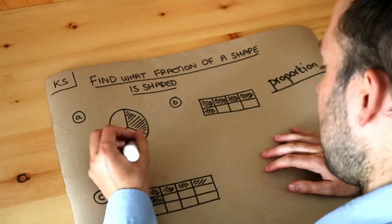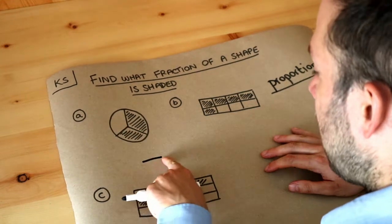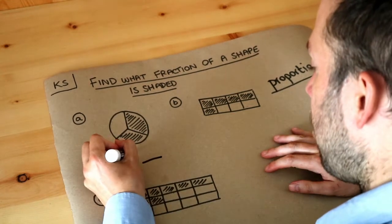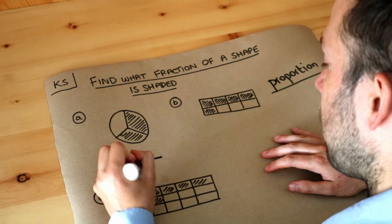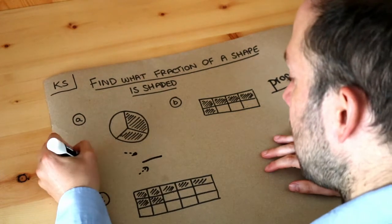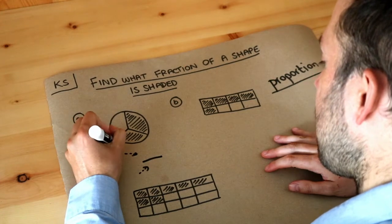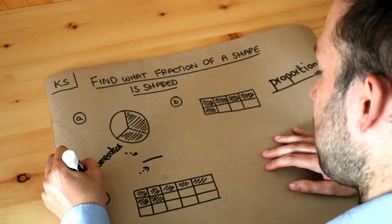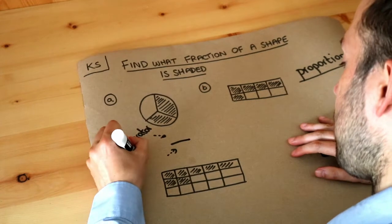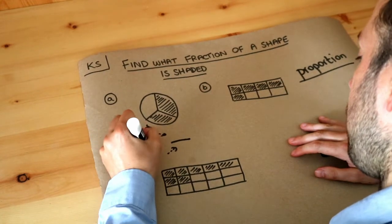Now the way we write a fraction is we have a horizontal line, we have a number at the top and a number at the bottom. The number at the top is called the numerator and I'll explain what I mean by that in a second. And the number at the bottom is known as the denominator. Note the spelling.